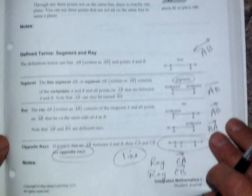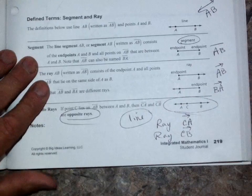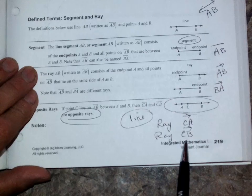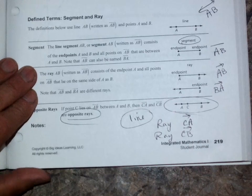Okay. So this is fairly easy stuff. There it is. Okay. We've got ray C, B, and ray C, A. When you connect them, they make a line. Okay. Those are opposite rays.